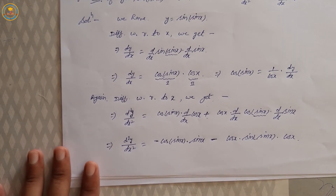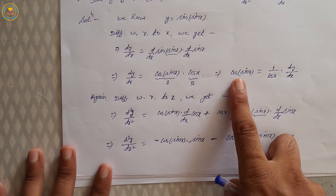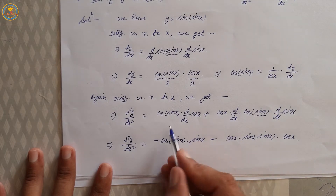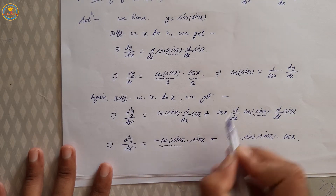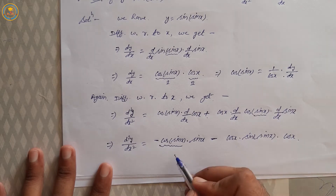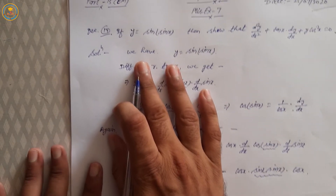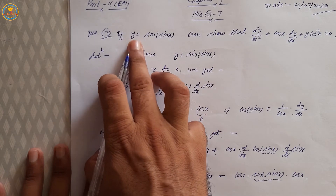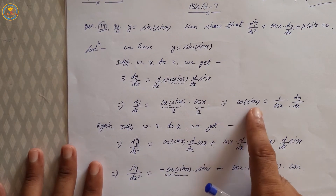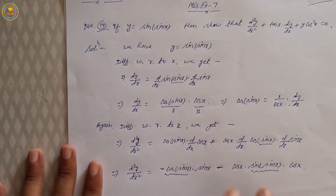Putting the value of cos(sin x) = (1/cos x) · dy/dx, and sin(sin x) = y. So substituting these values: cos(sin x) = (1/cos x)·dy/dx and y = sin(sin x).